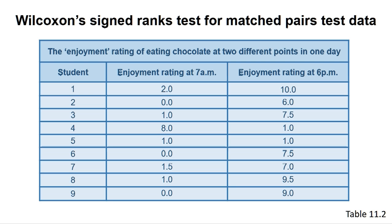Each individual is measured twice, with their self-assessed enjoyment rating of chocolate at 7am included in the data for the first sample, and their rating from 6pm included in data for the second sample. This type of data is said to be matched or paired. This data can be found in table 11.2.